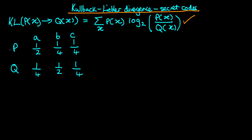What we're going to imagine is that we've got two primitive languages — one of them we're going to call p and another one we're going to call q. These primitive languages are composed of words which are made up of only three letters: a, b, and c. The two languages have different frequencies with which these three letters occur. In language p, a occurs half of the time, b occurs a quarter of the time, and c a quarter of the time. In language q, a is less common, occurring just one quarter of the time, b is more common occurring half the time, and c is exactly the same, occurring one quarter of the time.